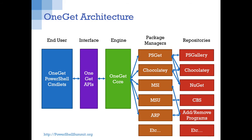For example, a PowerShell Get provider can talk to the public PowerShell Gallery, but it can also talk to the Chocolatey repository. The Chocolatey provider, built on NuGet, can talk to Chocolatey or a NuGet repository. MSU can talk to the component-based servicing stack in Windows, which is what Windows Update is built on. There are also providers planned for things like Visual Studio extensions and software ID tags.